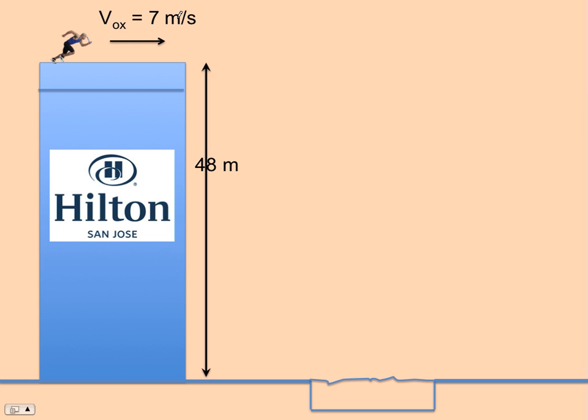We also need to know how high the building is, 48 meters, and how far away the pool is from the bottom of the building. If the pool is 10 meters wide, it looks like about one pool length from the edge of the building. So the edge of the pool is 10 meters from the edge of the building.